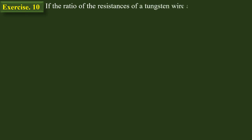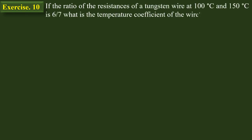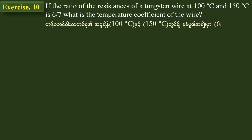The ratio of the resistance of a wire at 100 degrees Celsius to its resistance at 150 degrees Celsius is 6 by 7. We need to find the temperature coefficient of resistance of the wire.